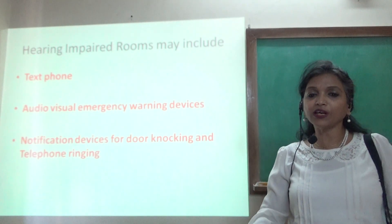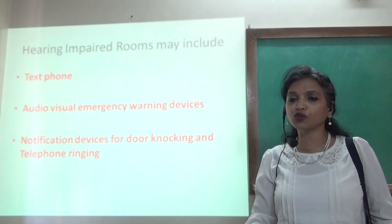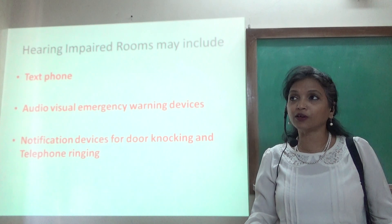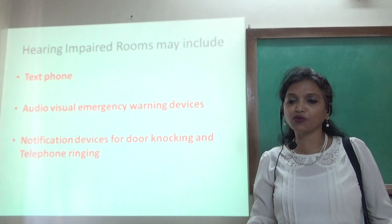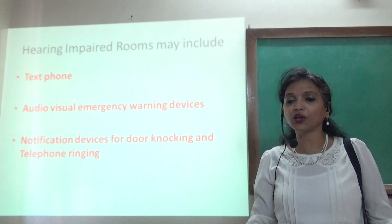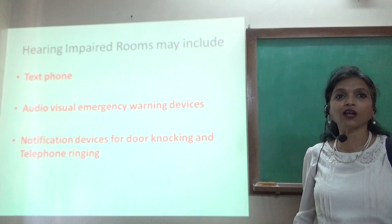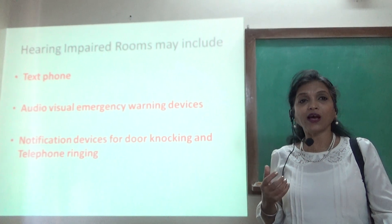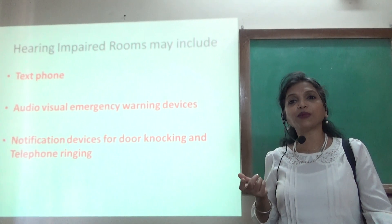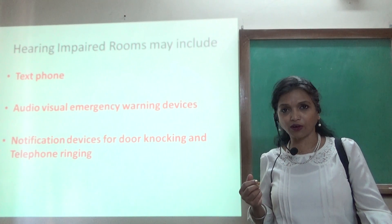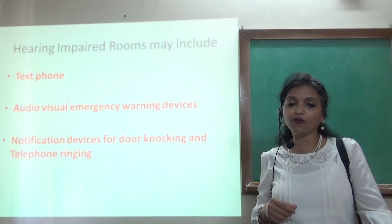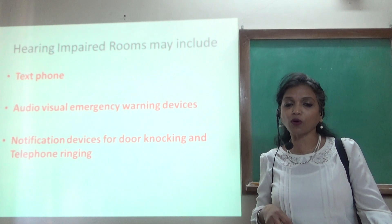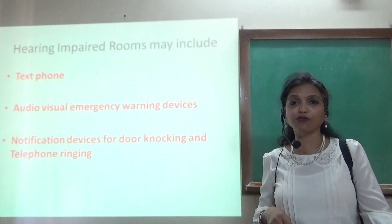For hearing impaired rooms, it should also include a text phone and an audio-visual emergency warning device, because in case of a fire alarm the guest is not able to hear. Similarly, if somebody is knocking at the door, the guest cannot hear, so we should have notification devices for door knocking and telephone ringing.